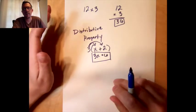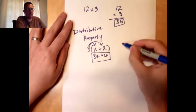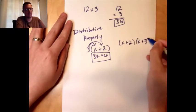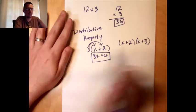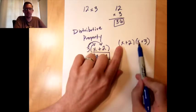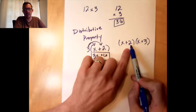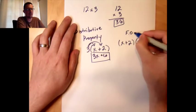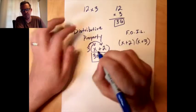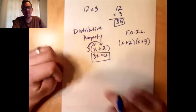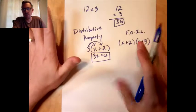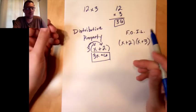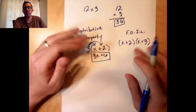The distributive property is used quite a bit in algebra. You may have gotten really advanced with it and done something like (x+2)(x+2) — also the distributive property. Your math teacher may have referred to this as the FOIL method, though I do not like that term. We're not going to be doing any algebra here; instead, we're going to use this method for standard multiplication.